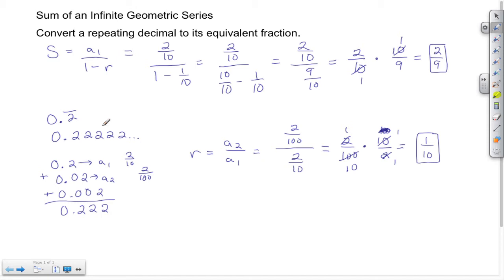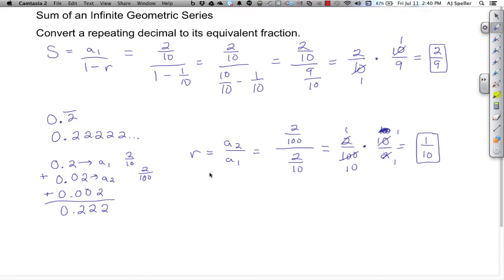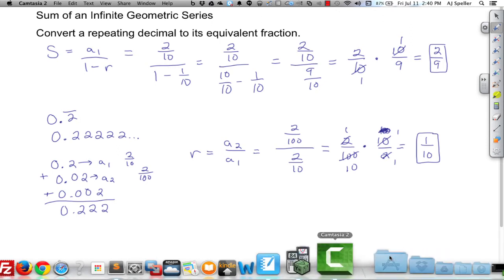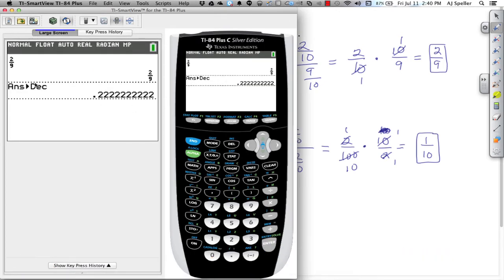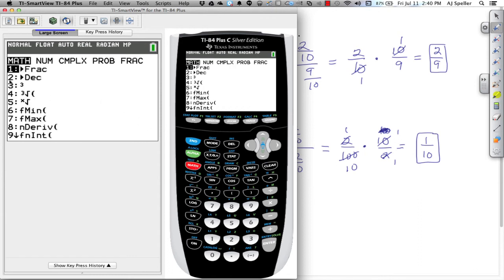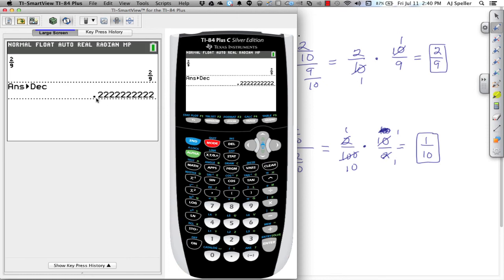The last thing I want to do is call the calculator just so that we can take a look at verifying the result. With the calculator here, I've already put in 2/9 and it gave me back 2/9. So I wanted to convert that to a decimal. I did that by pressing the math button. You see the second option is decimal, and when I did that, we see that I have a series of repeating twos.